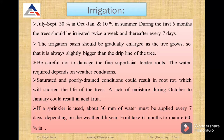Irrigation varies with tree age and season. During the first 6 months, trees should be irrigated twice a week, every 7 days. The irrigation basin should be gradually enlarged as the tree grows. Care should be taken not to damage the fine superficial feeder roots at the time of irrigation. Saturated and poorly drained conditions could result in root rot, and lack of moisture during tuber may result in acidic fruit. If a sprinkler is used, about 30 mm of water must be applied every 7 days depending on the weather.